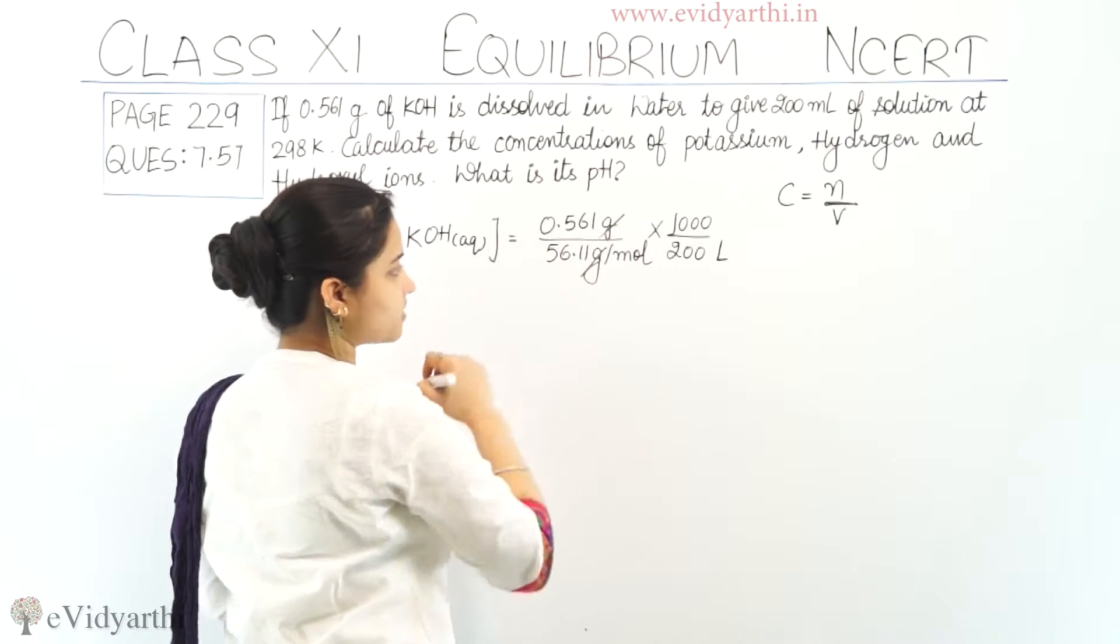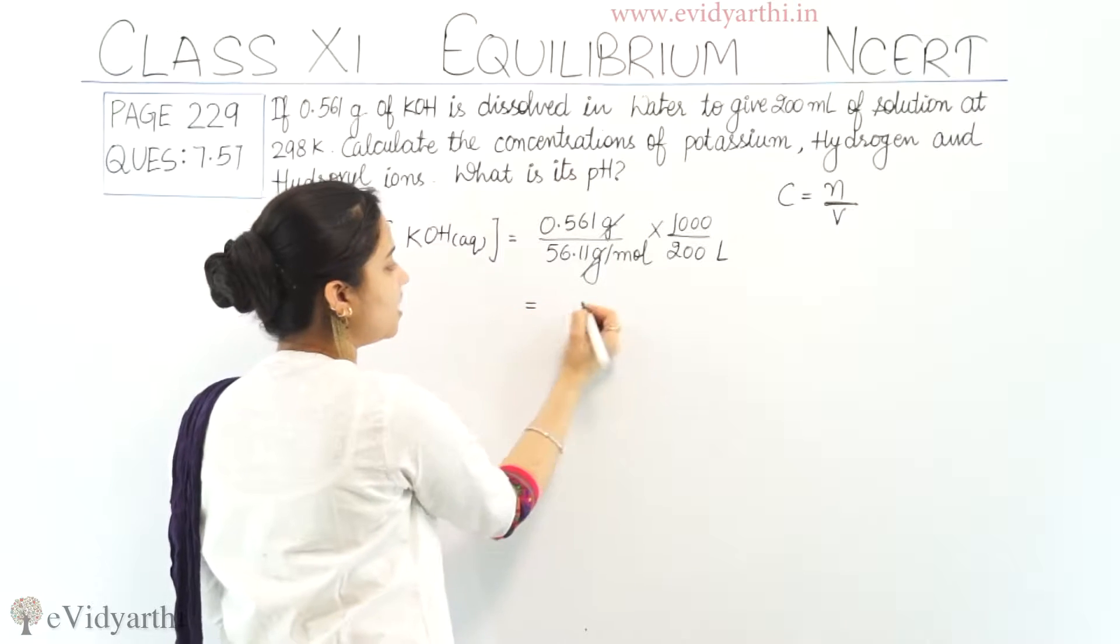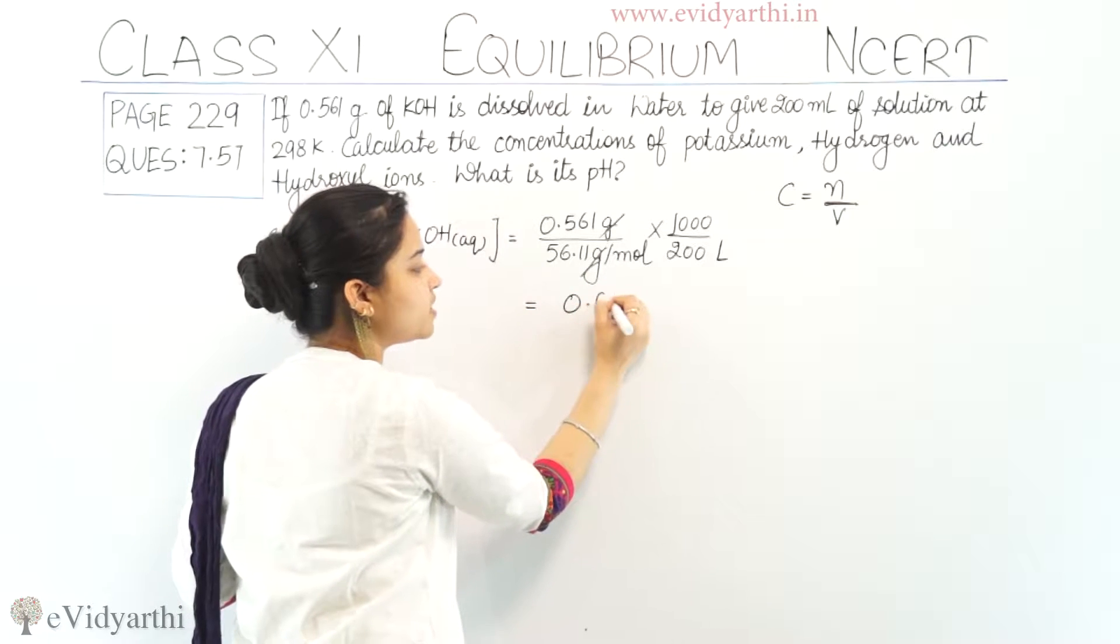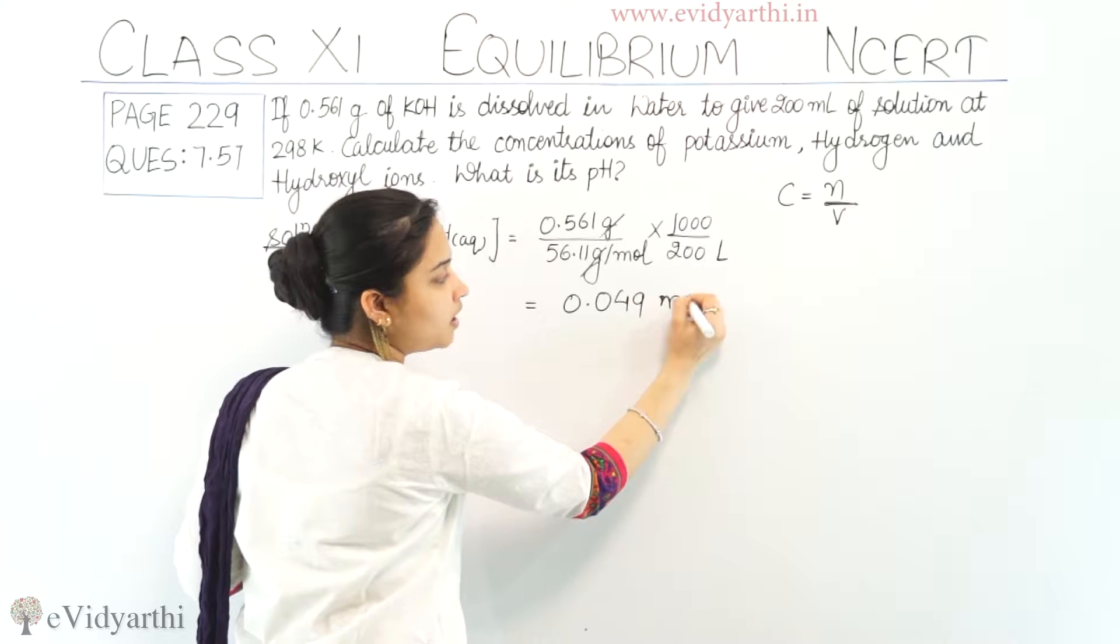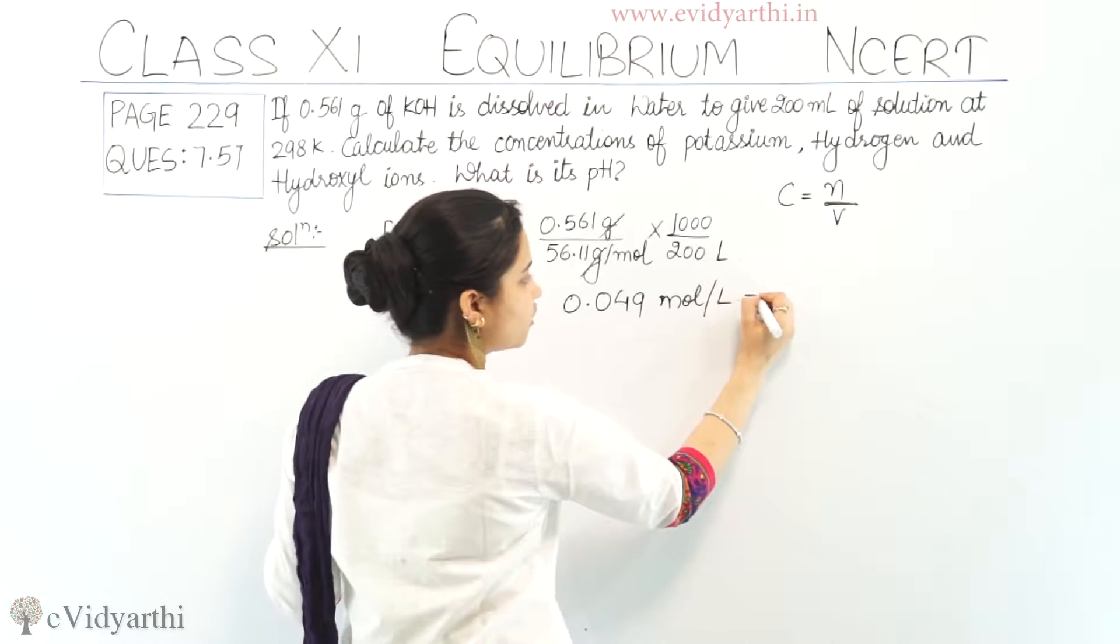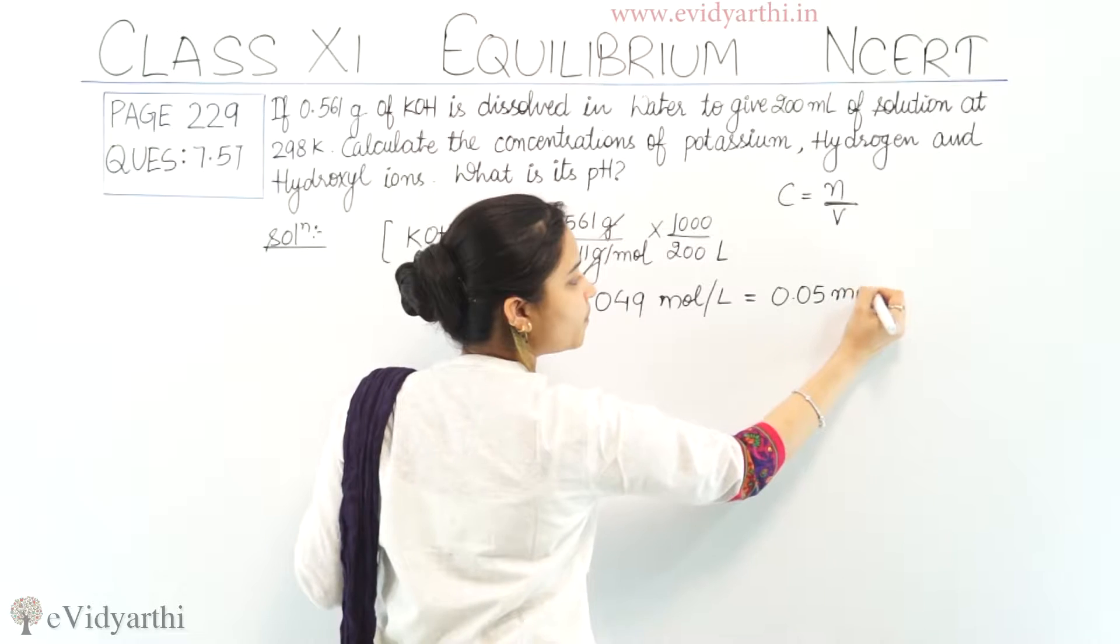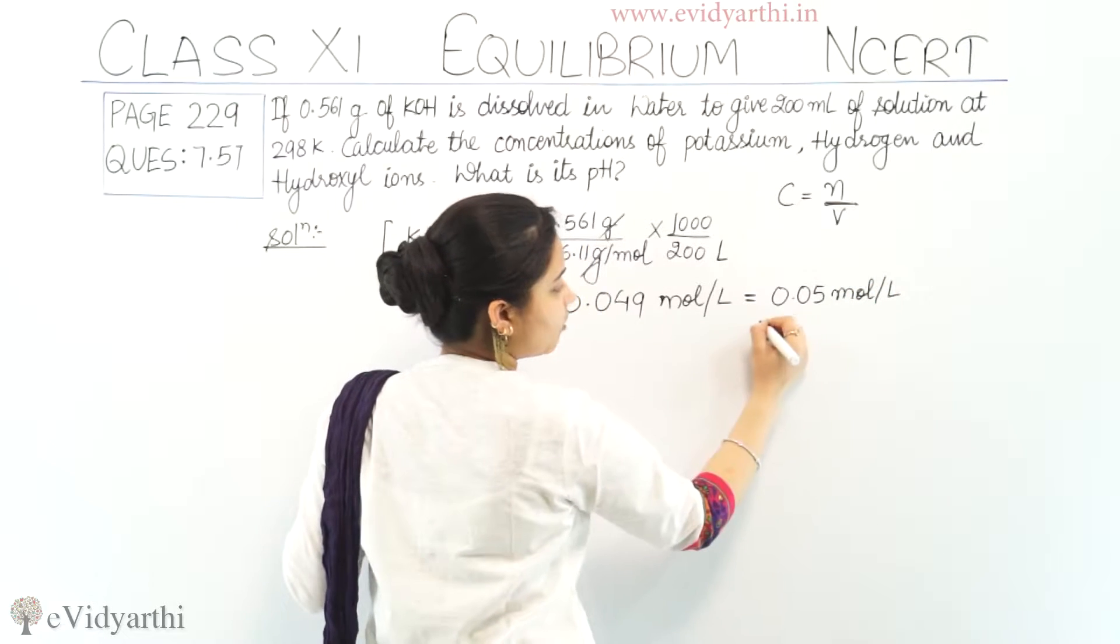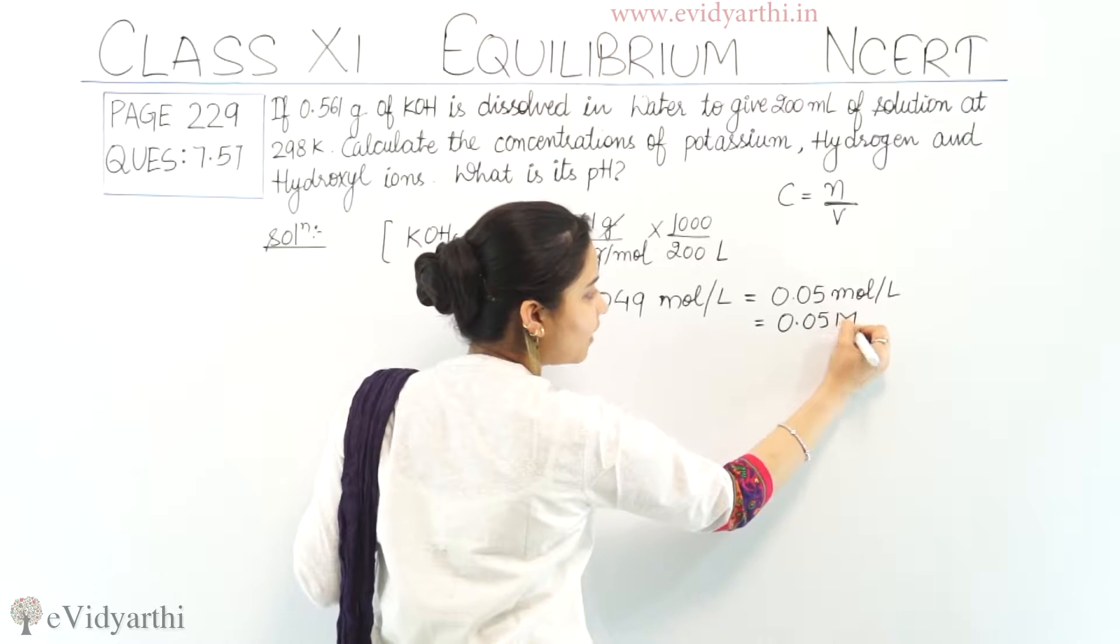Gram se gram cancel ruk ho jayega. Or, jab abhi isko solve kar diya, completely aak minhe ga 0.049 mole per liter. Isko agar we round off kar diya, toh ban jayega 0.05 mole per liter. Or, is in kya or ke sakti hai? 0.05 molar.